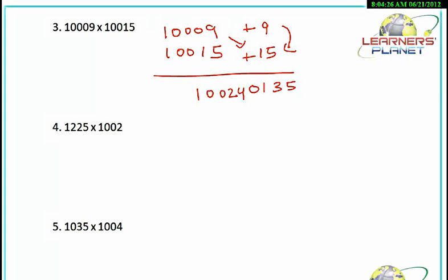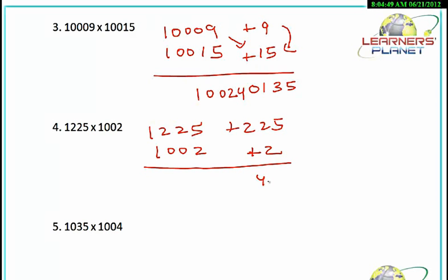Even your calculator will not be able to calculate as accurately! Let's begin with the next question: 1225 into 1002. It's 225 more than 1000 and 2 more than 1000. So 225 into 2 is 450. Then 1225 plus 2 is 1227. We are working faster than a calculator!